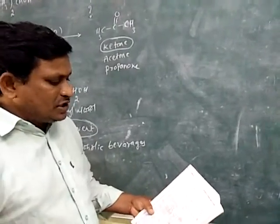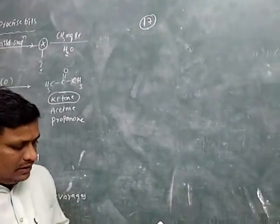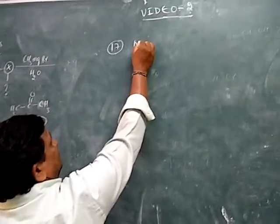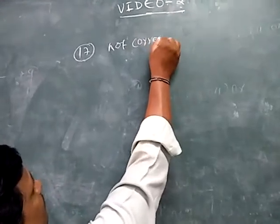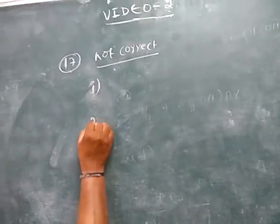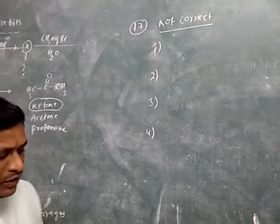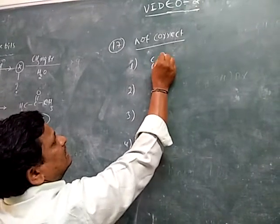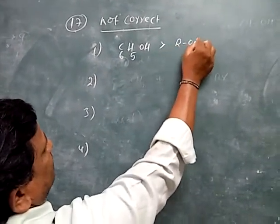Conceptual bit number 17: Which of the following statements is not correct? Option 1: Carboxylic acids, phenols are stronger acids than alcohols — ROH is alcohol. Option 2: Carboxylic acids — RCOOH — are stronger acids than phenols — C6H5OH.